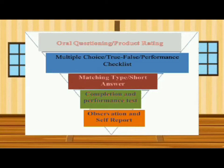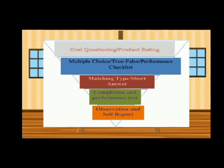True-false is also an objective type of test. Performance checklist is a subjective type of test that identifies the reliability and validity of learning acquired. Third most used are matching type and short answer, both objective type tests that assess memory skills. Fourth is the completion test, which measures memory. Performance test assesses the level of understanding by applying and evaluating valuable ideas.